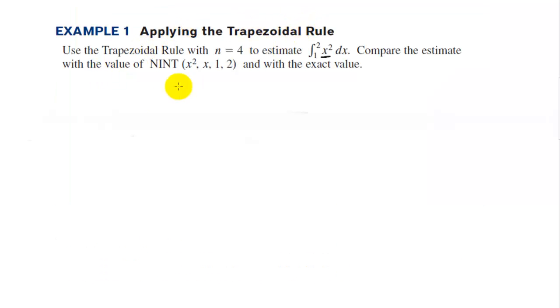In example 1, we're going to apply the trapezoidal rule, using the trapezoidal rule with n equals 4 to estimate the integral from 1 to 2 of x squared dx. Compare the estimate with the actual value. So let's draw a parabola, and we're going from 1 to 2, and we're going to split into 4 trapezoids. So that'll be 1 and a fourth, that'll be 1 and a half, and 1 and three fourths, because we take 2 minus 1 divided by 4, so each is worth a fourth.